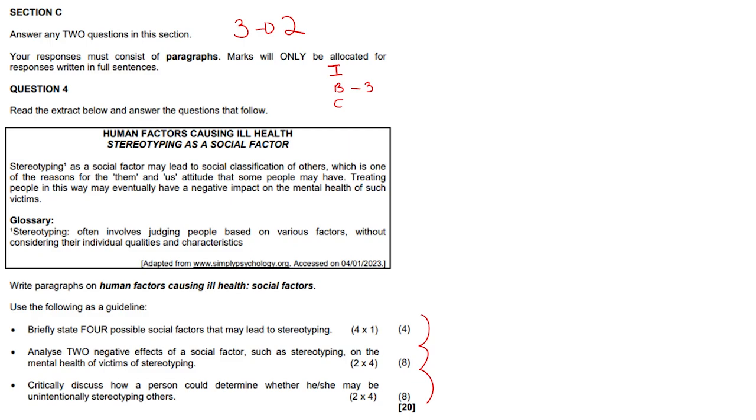So write paragraphs on human factors causing ill health - social factors. Use the following as a guideline: briefly state four possible social factors that may lead to stereotyping. Okay, so four factors here - uno, dos, tres, cuatro. Look top right, that's what we're going to do.